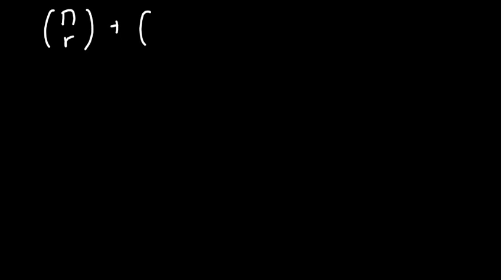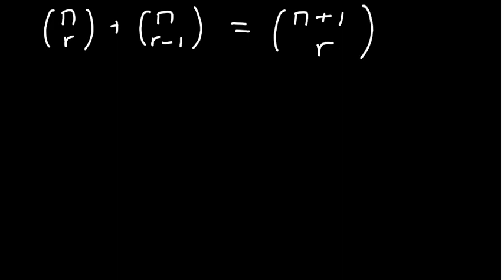In this video we are proving that nCr added to n choose r minus 1 is equal to n plus 1 choose r. This is a very interesting question, so pay particular attention. Let's move step by step. If you've dealt with binomial coefficients already, feel free to pause this and try it out.